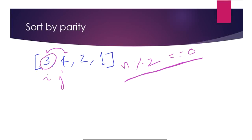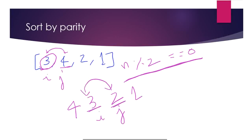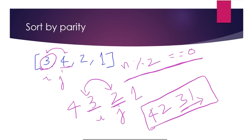So first, if it is an odd number followed by an even number, a swap happens and the array becomes 4, 3, 2, 1. Now i and j advance. Again we have an even number and an odd number, so the swap happens giving us 4, 2, 3, 1. It iterates till the last element, finds no more even numbers, and returns the array.